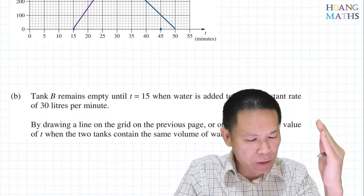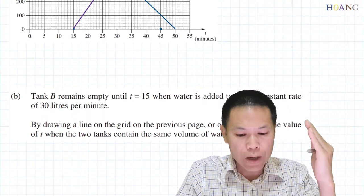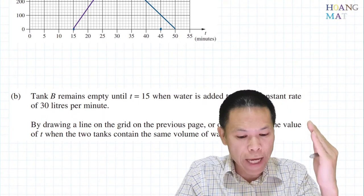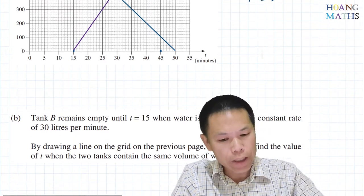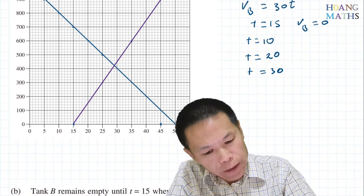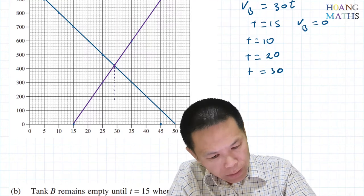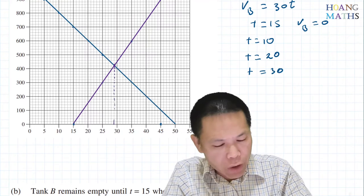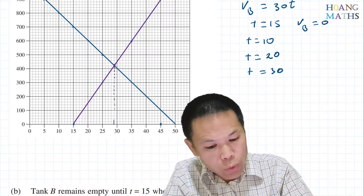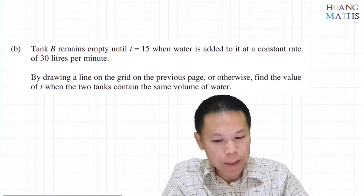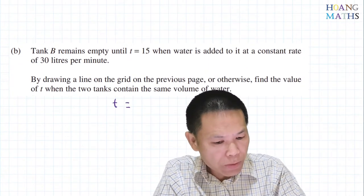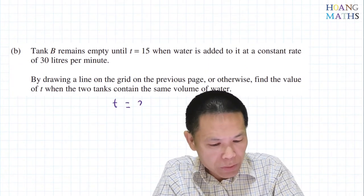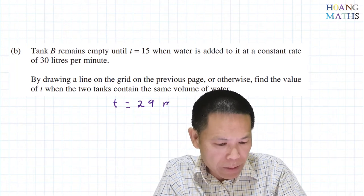We need to find the value of t when the two tanks contain the same volume of water — that's the intersection point of the two lines. Reading the graph, going up one minute at a time, the answer for Part B is t = 29 minutes.